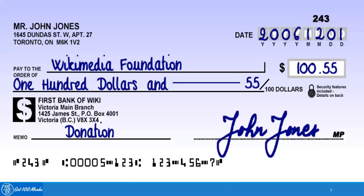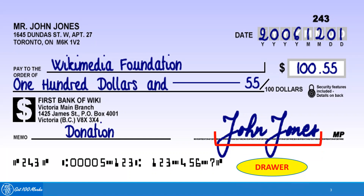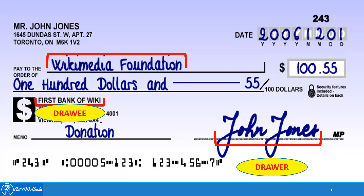These are the three basic parties. I can explain it using this example. You can see here there is a check issued by John Jones in the name of Wikimedia Foundation, and he has issued the check of his bank, which is the First Bank of Wikimedia. John Jones, who has an account with the First Bank of Wikimedia, has signed and given the check — so he is the Drawer, because it is his account from which the amount has to go. John Jones is directing this bank to make the payment on his behalf, and because of that we call this bank the Drawee. The third party, Wikimedia Foundation, on whose name John Jones has issued the check and who is entitled to receive the cash, is called the Payee.